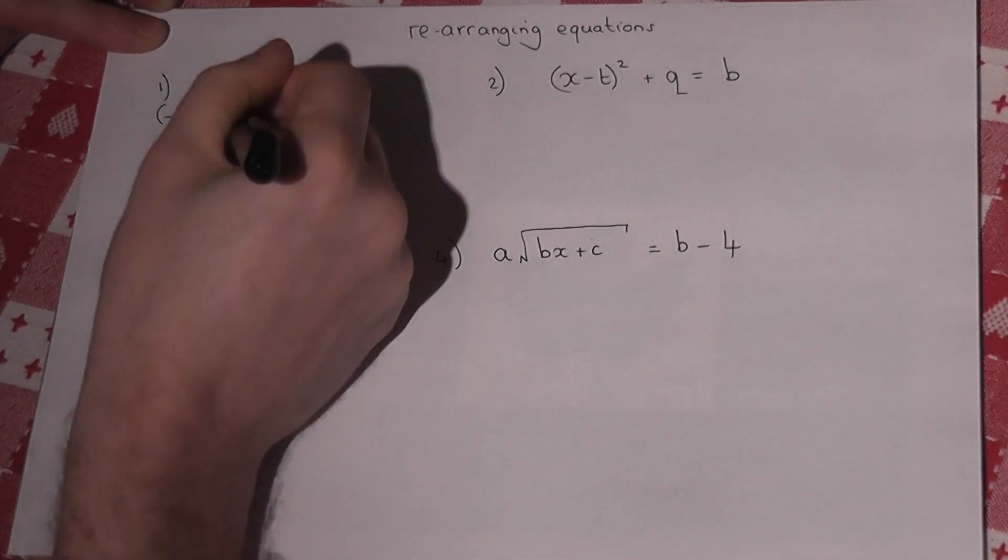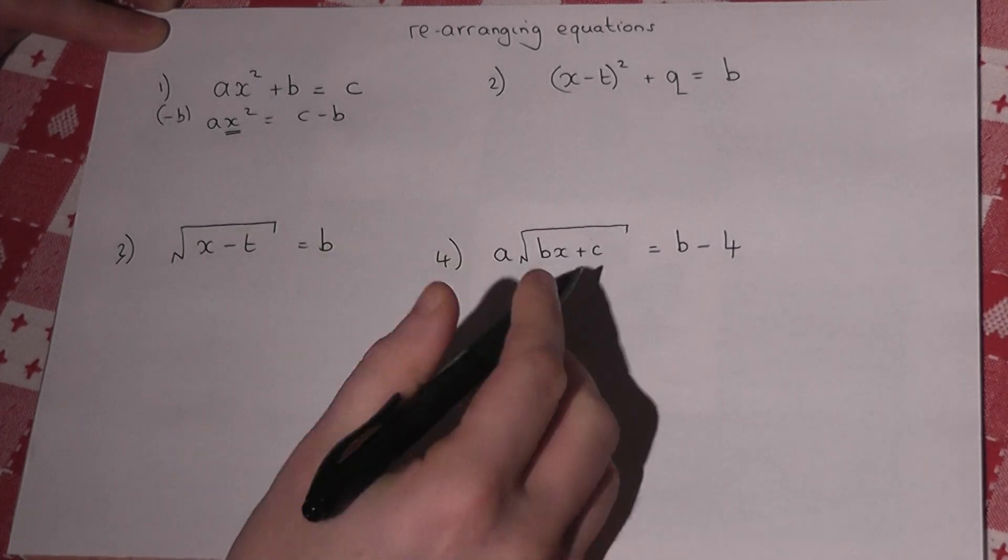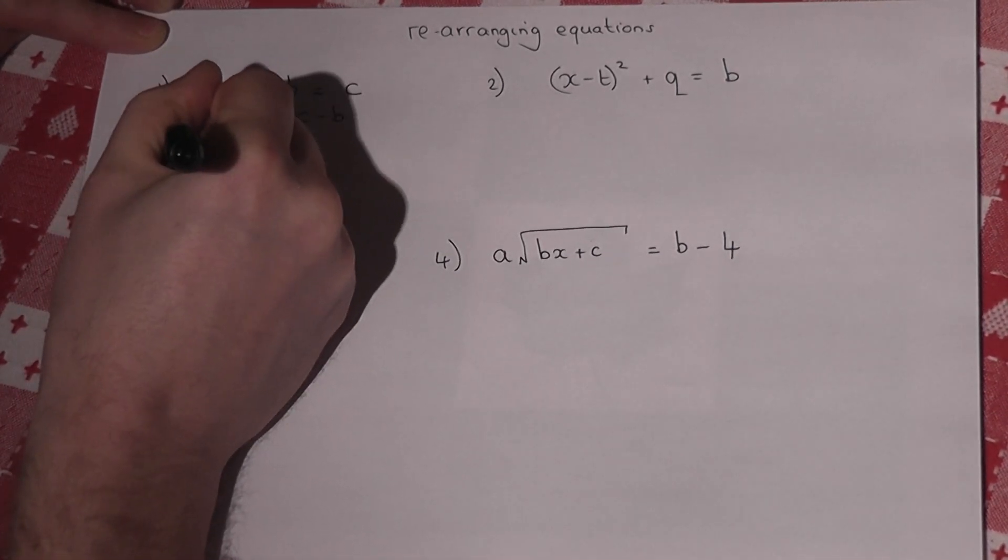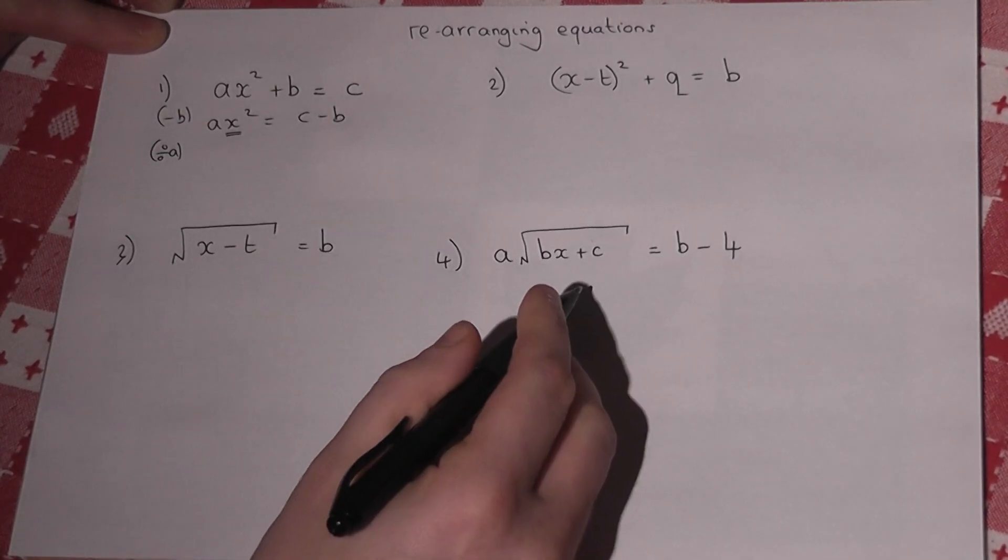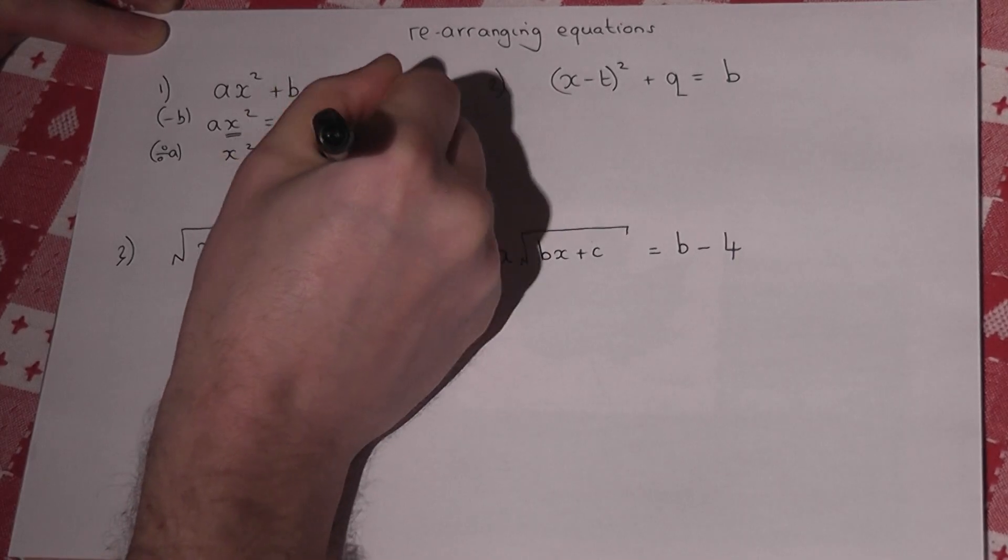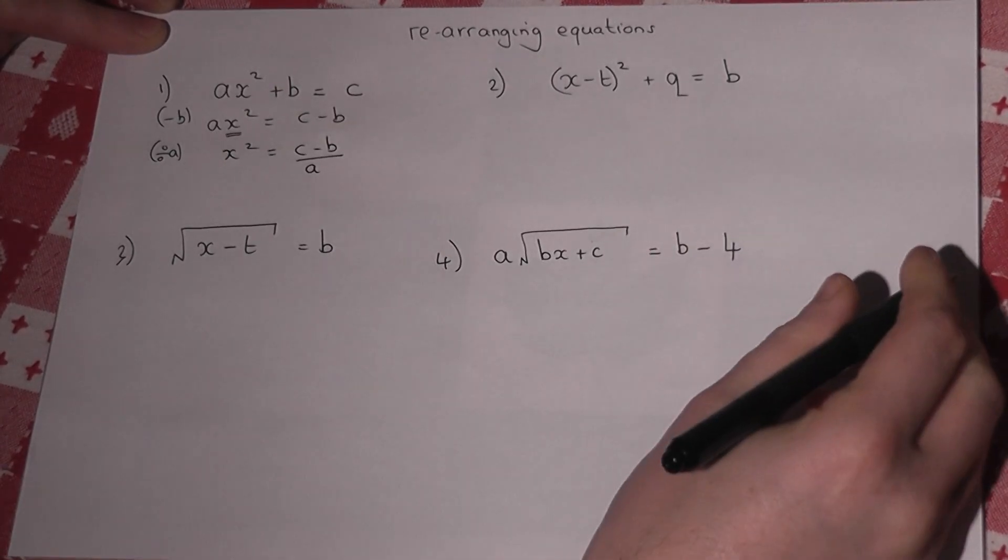Now, I want to get down to an x squared term in the end, to then square root. So if I then divide by a, that will get the x squared term by itself. So x squared equals c minus b, all divided by a.